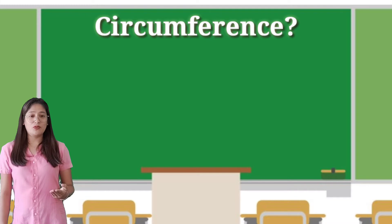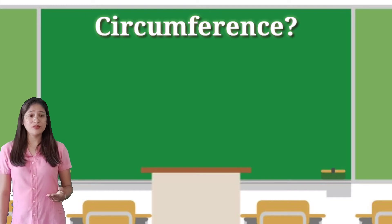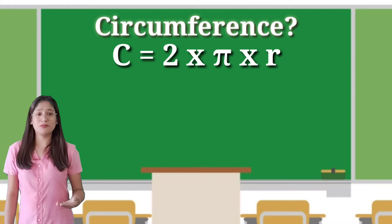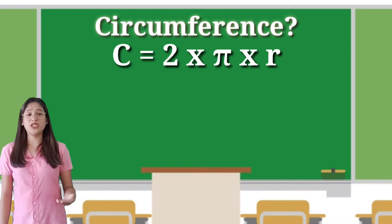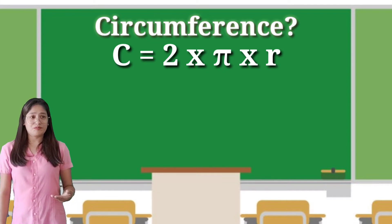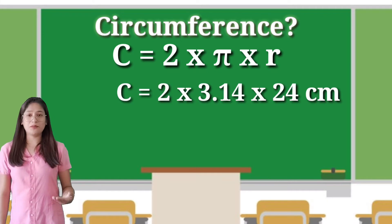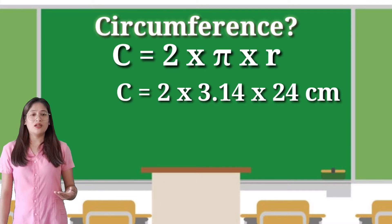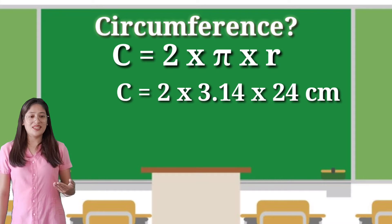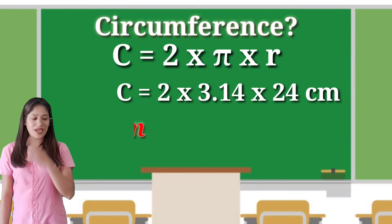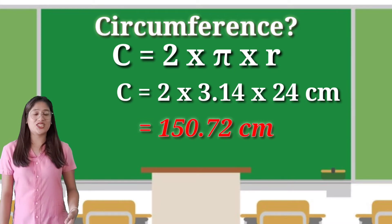We will use the formula: circumference equals 2 times pi times r. If we substitute it, we will write 2 times 3.14 multiplied by 24. We will have the circumference, which is 150.72 cm.